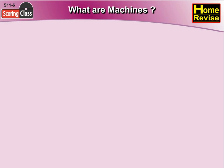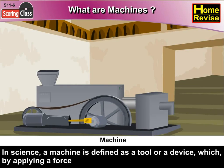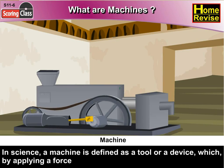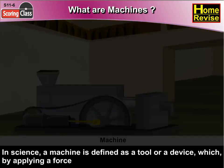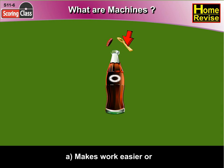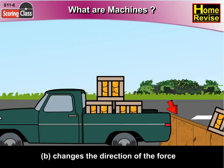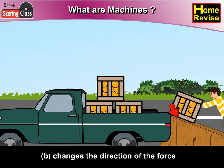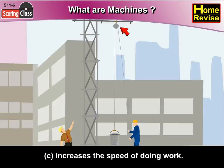What are machines? In science, a machine is defined as a tool or a device which, by applying a force: a. makes work easier, or b. changes the direction of the force, or c. increases the speed of doing work.